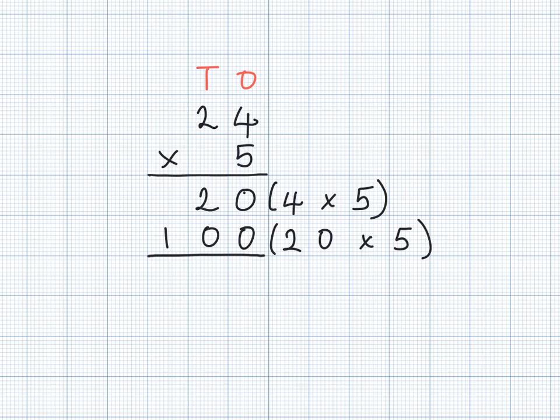Let's add a 100s column to our calculation. Finally, we add our two answers together. 20 plus 100 equals 120. Therefore, 24 times by 5 equals 120.